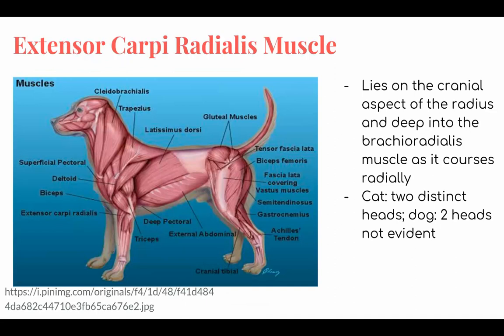Extensor carpi radialis muscle. It is the largest of the cranial lateral muscle group. It lies on the cranial aspect of the radius, deep to the brachioradialis muscle as it courses radially. In a cat, there are two distinct heads; in a dog, there are two but they are not evident. The function is to extend the carpus.